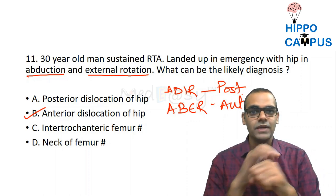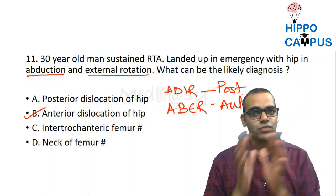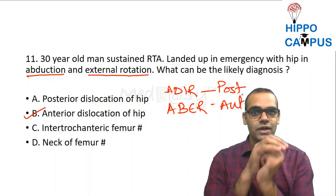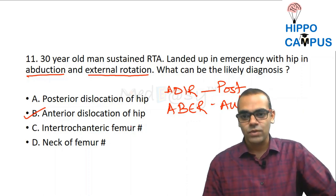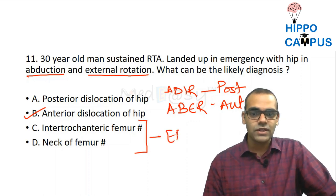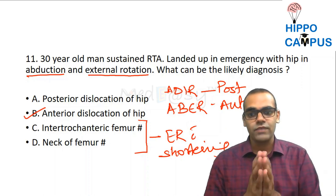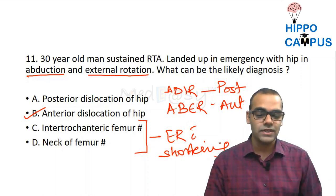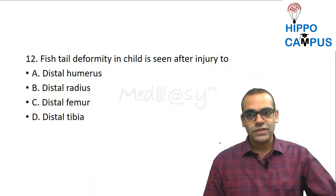In anterior dislocation of the hip, the deformity is external rotation and abduction. In posterior dislocation, it is adduction and internal rotation. In intertrochanteric femur fracture and neck of femur fracture, there will be external rotation with shortening of the limb. So the answer here is anterior dislocation of hip.